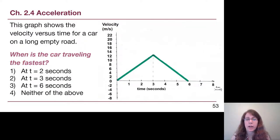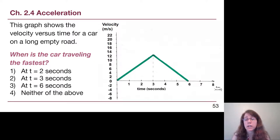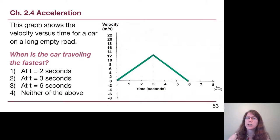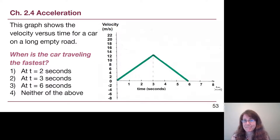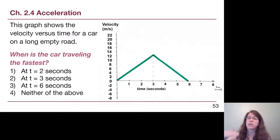For the next couple of questions we'll have multiple choice. Pause the video and commit to an answer before letting the video keep playing — that way you can see if your thinking is on the right track. For this graph, when is the car traveling the fastest? Looking highest up the vertical axis, at three seconds — option two — is when it is traveling the fastest.